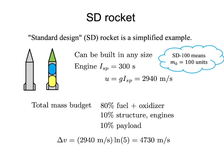A standard design rocket can accomplish a total delta-V of U times the log of 5. That 5 is 100% divided by 20%, because after expending all the fuel, all that remains is the structure and payload. So that's 2,940 meters per second times the log of 5, which equals 4,730 meters per second. Notice that delta-V can be bigger than U — the achievable speed can actually exceed the exhaust speed, provided the mass ratio is large enough.